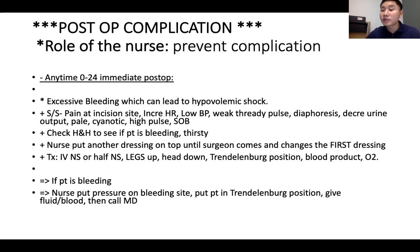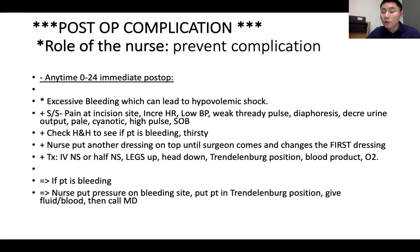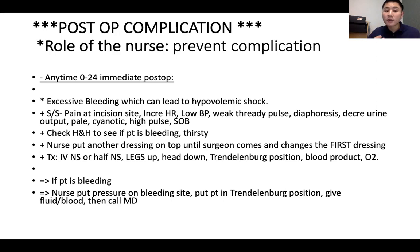Check the H&H to assess for bleeding. The nurse places an additional dressing on top of the wound until the surgeon comes — the surgeon is the person who changes the first dressing. Treatment includes IV normal saline or half normal saline, placing the patient in Trendelenburg position (legs up, head down), giving blood products and oxygen. If bleeding, apply pressure to the site, place in Trendelenburg, give fluid and blood, then call the MD.